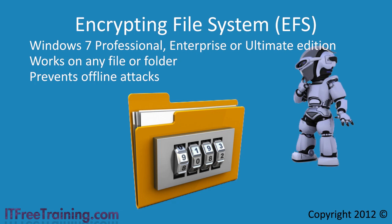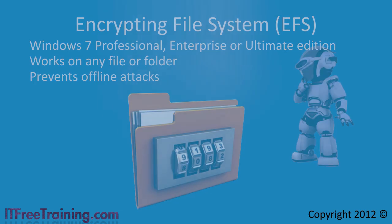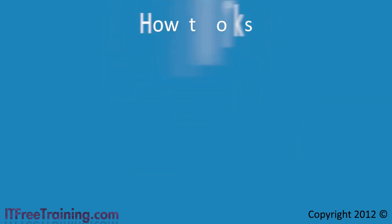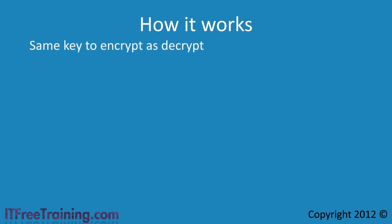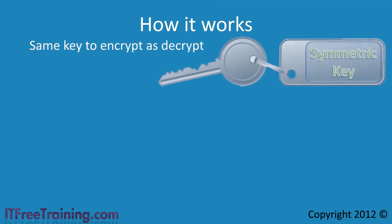By using EFS to encrypt your files, the attacker will not be able to make sense of any of the files even when reading them using an offline attack. To make EFS fast, it uses a symmetric algorithm. This essentially means it uses the same key to encrypt the file as to decrypt the file.